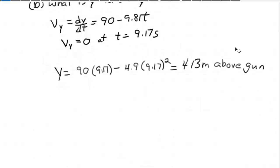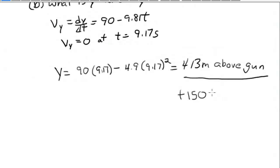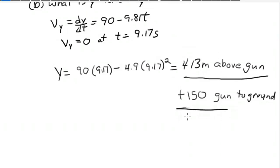But wait — is 413 meters the answer? No, because the question asked how far above the ground the projectile reached, not above the gun. So we have to add the 150-meter height of the cliff. That gives us the final answer of 563 meters above the ground.